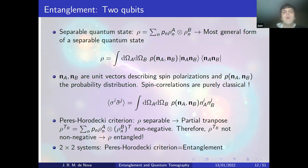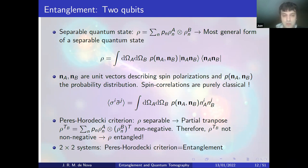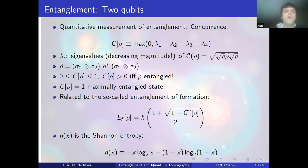With two qubits we can consider entanglement. The most general separable state takes the form ρ = Σ pₙ ρₙᴬ ⊗ ρₙᴮ, where pₙ is a classical probability distribution and the spin correlations are purely classical. To detect entanglement, the most used criterion is the Peres-Horodecki (PPT) criterion: if ρ is separable, the partial transpose must be non-negative. If the partial transpose is not non-negative, the state is entangled. In 2×2 systems, this is both a necessary and sufficient condition.